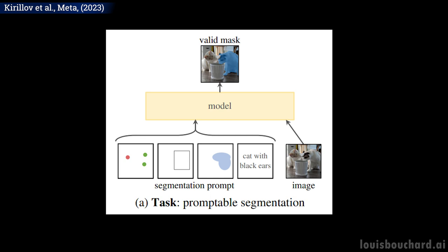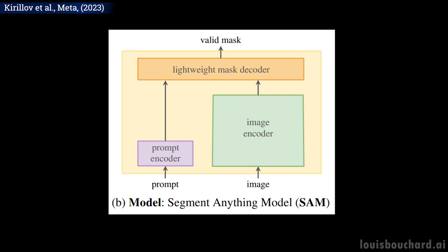Then, we use an image encoder, as with all segmentation tasks, and a prompt encoder. The image encoder will be similar to most I already covered on the channel, where we take the image and basically extract the most valuable information from it using a neural network. Here, the novelty is our prompt encoder.